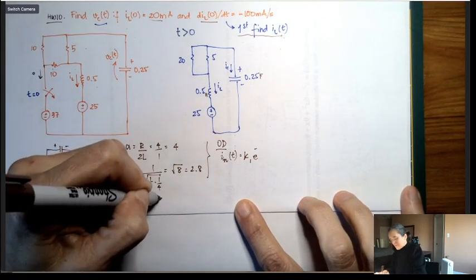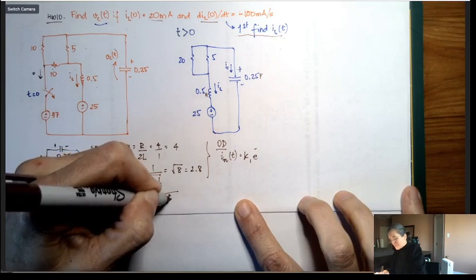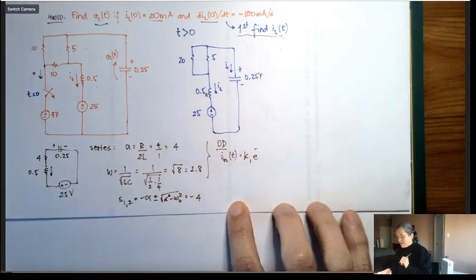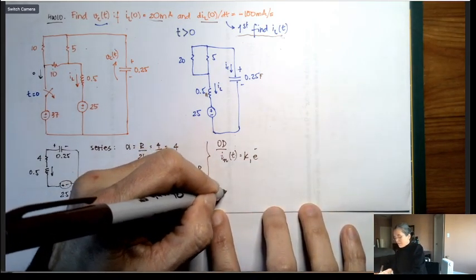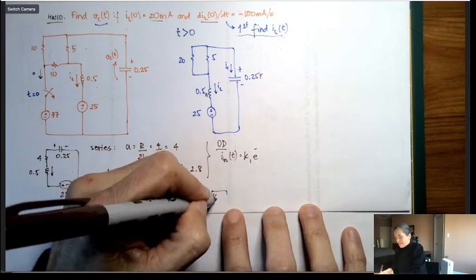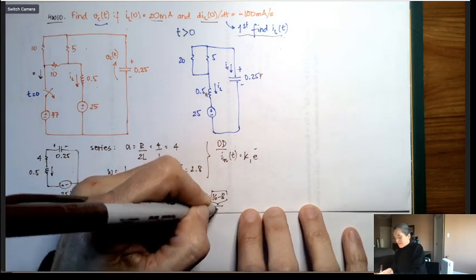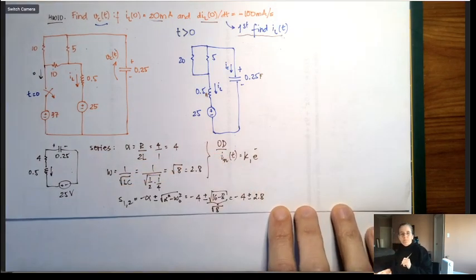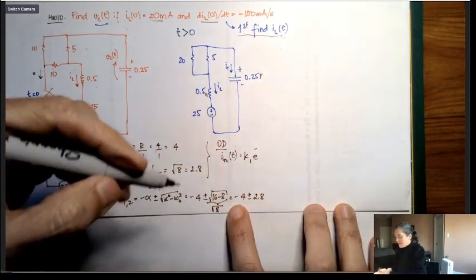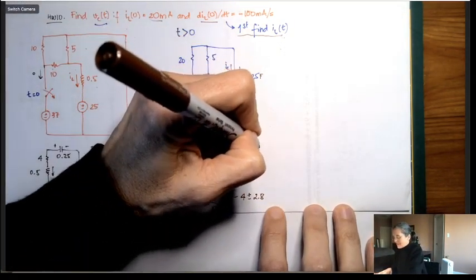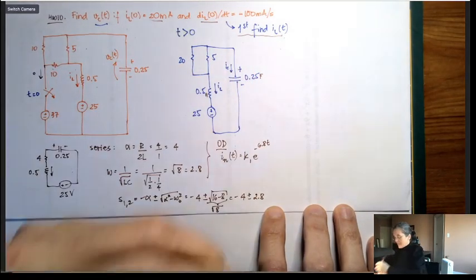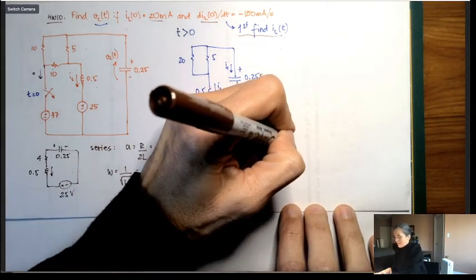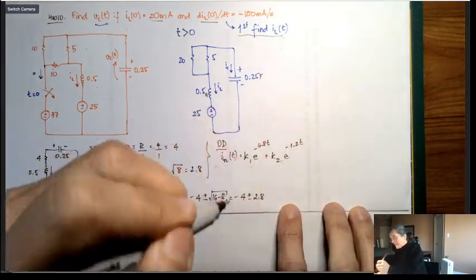s1 and s2 equal minus alpha plus or minus the square root of (alpha squared minus omega-naught squared). That is: −4 ± √(16 − 8) = −4 ± √8 = −4 ± 2.8. So s1 = −4 − 2.8 = −6.8 and s2 = −4 + 2.8 = −1.2.